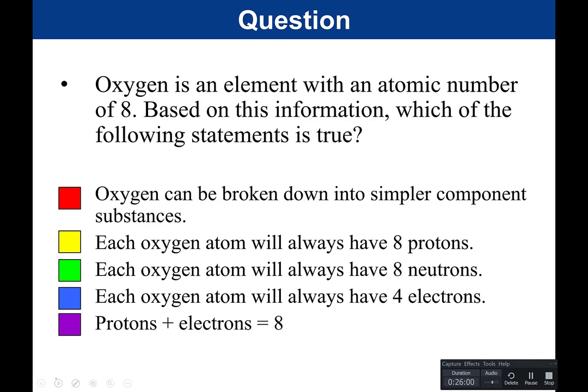Here is a question: oxygen is an element with an atomic number of eight. Based on this information, which of the following statements is true? Red: oxygen can be broken down into simpler component substances. Yellow: each oxygen atom will always have eight protons. Green: each oxygen atom will always have eight neutrons. Blue: each oxygen atom will always have four electrons. Or purple: protons plus electrons is eight.